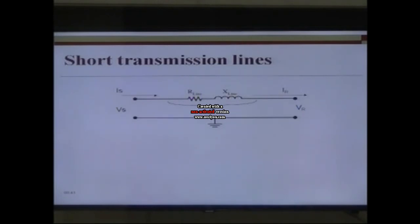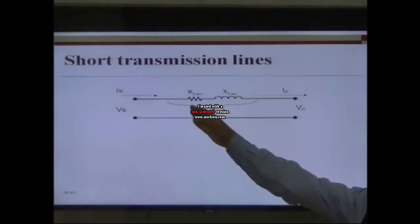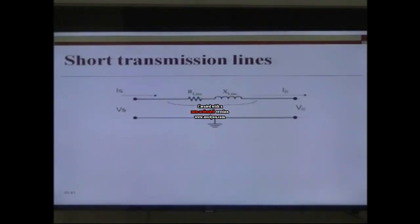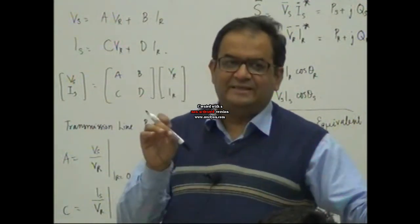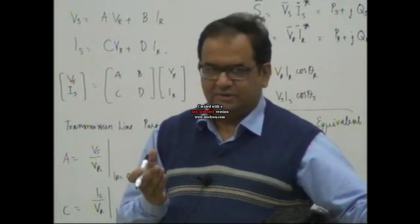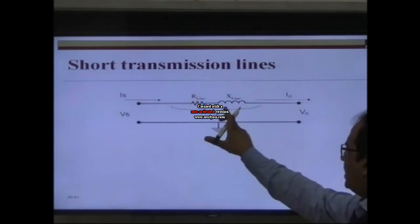Effectively, for every piece of the line — say every one meter — there will be some impedance, and as you move along the line the impedances add up. This means the impedance is actually uniformly distributed over the line, which is the true physical case. But for a short transmission line, we assume it is lumped and represent it with just some R and X.